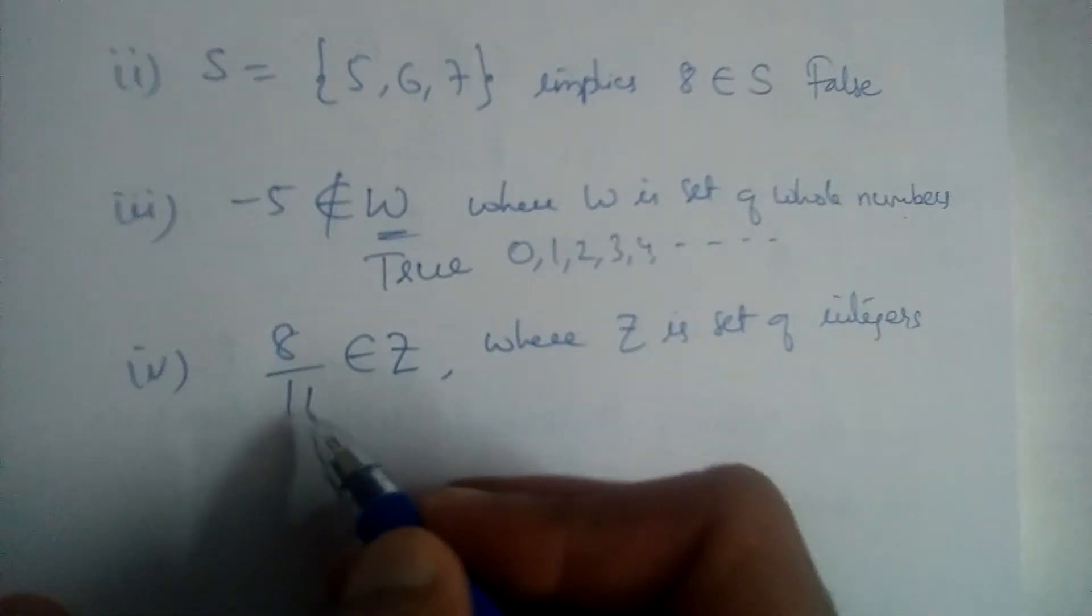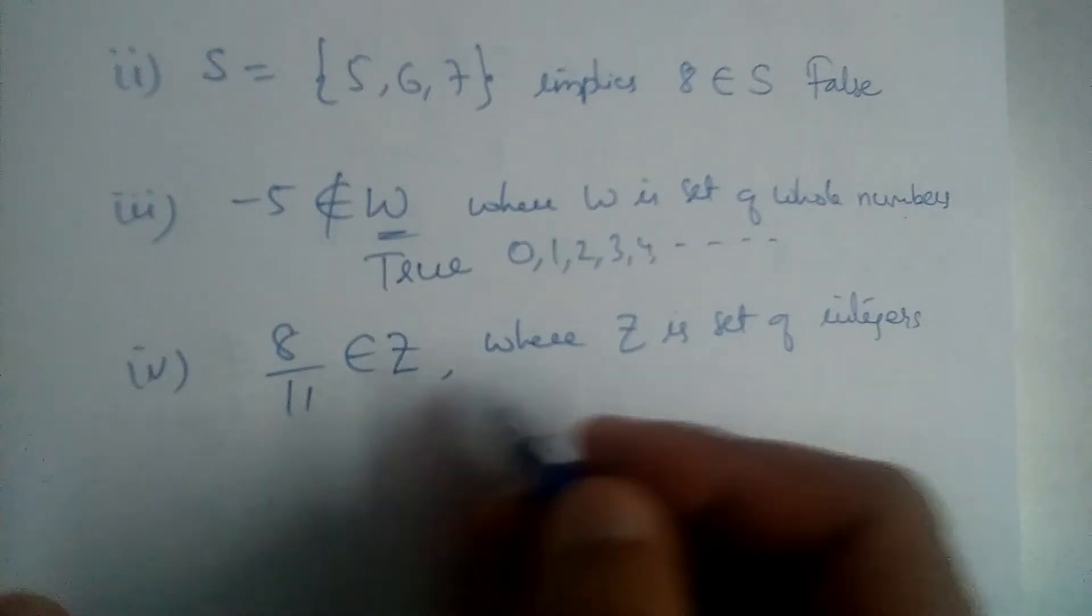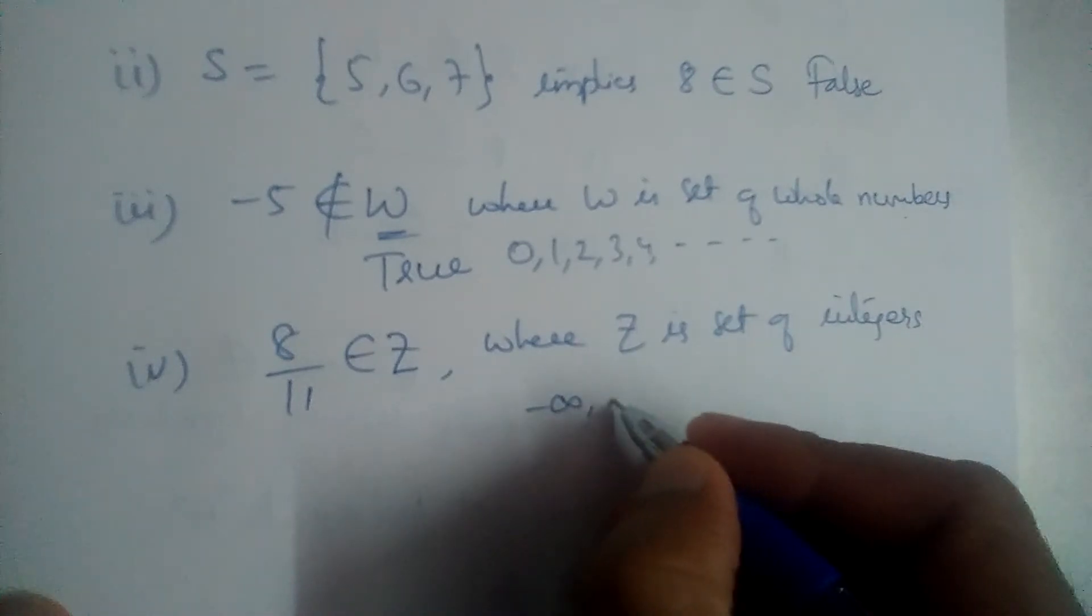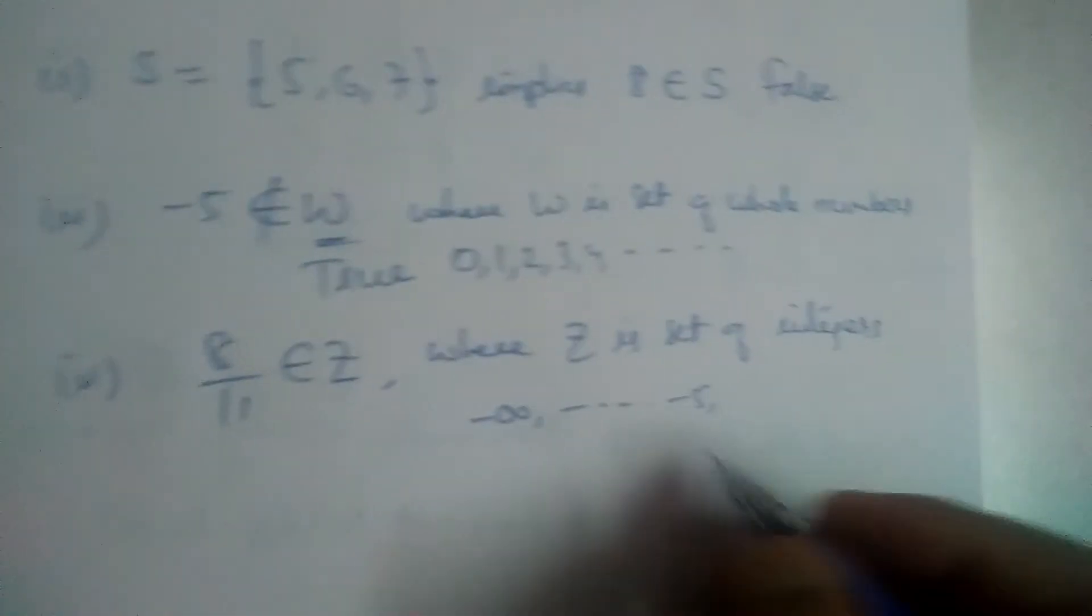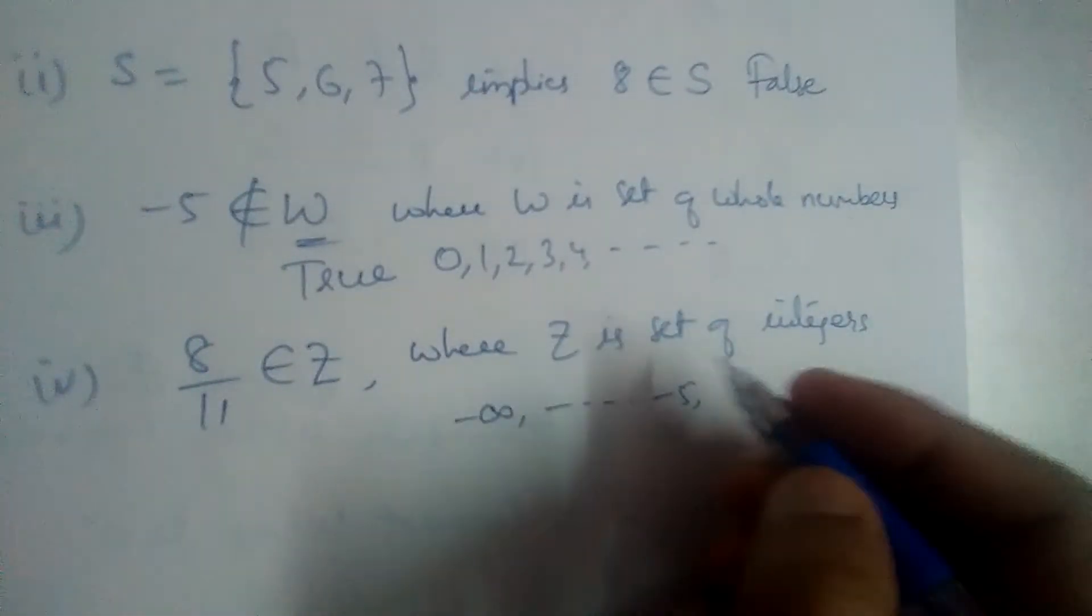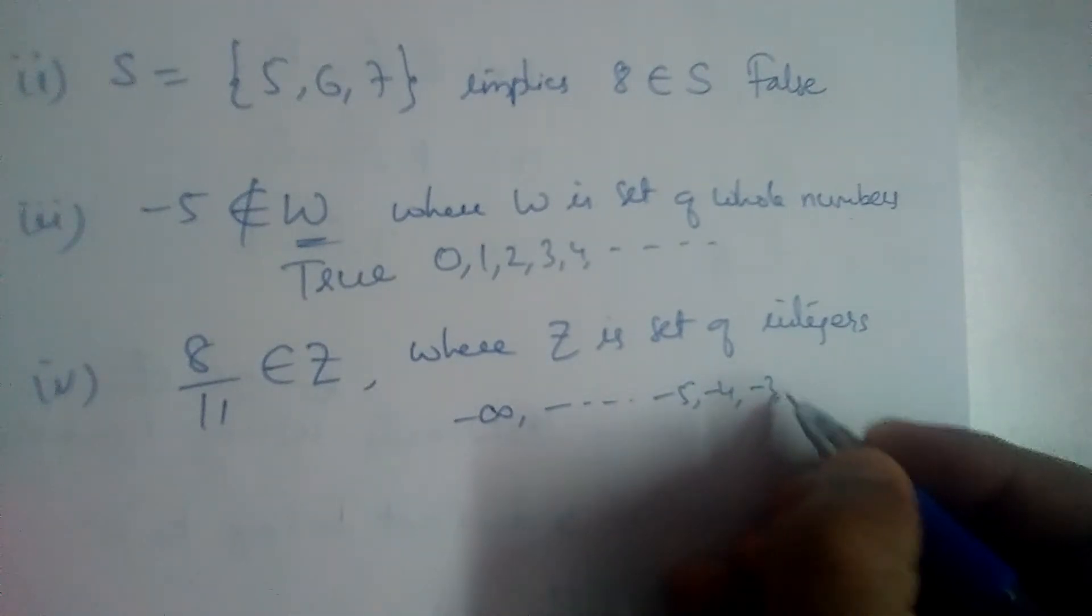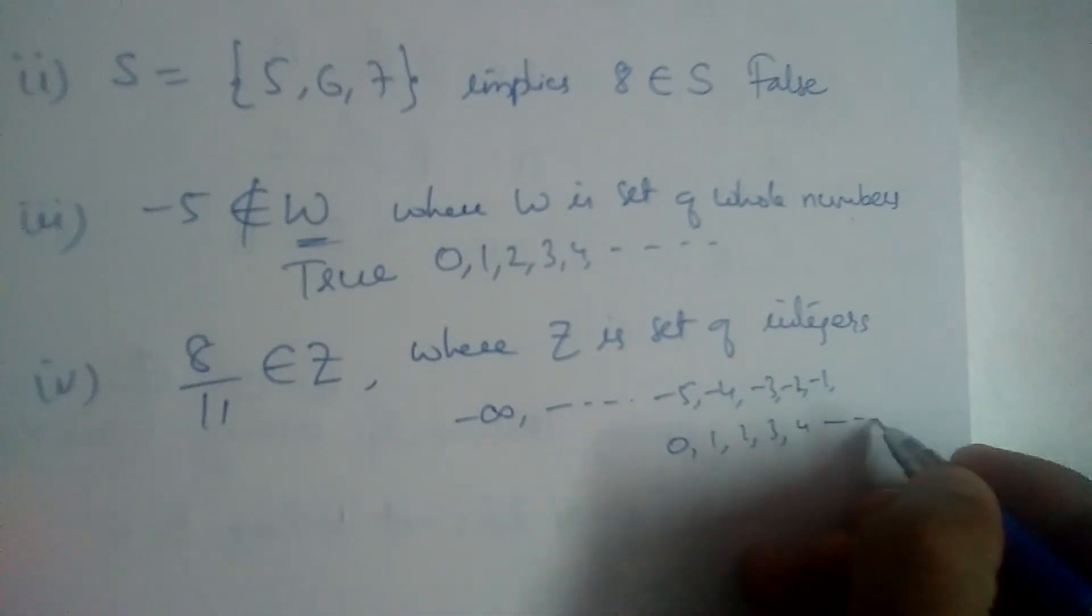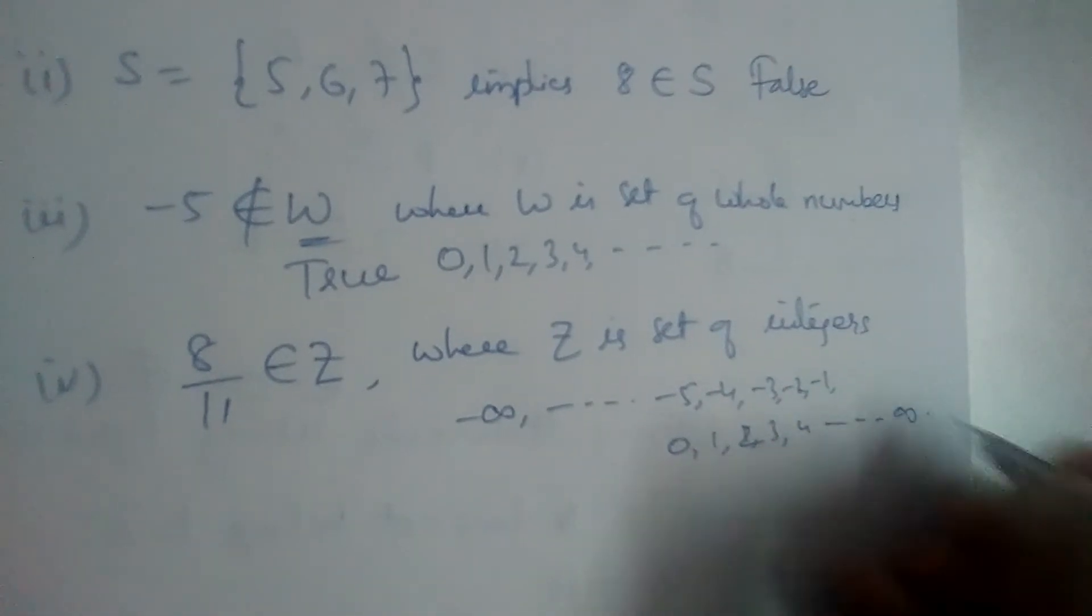Now the last one: 8/11 belongs to Z, where Z is a set of integers. We know integers are the whole numbers, negative numbers: minus 4, minus 3, minus 2, minus 1, 0, 1, 2, 3, 4, and so on up to infinity, right?